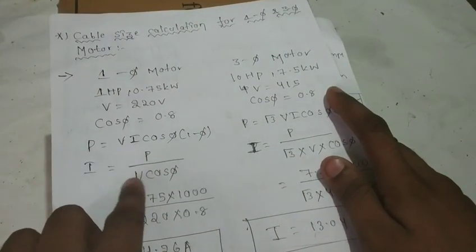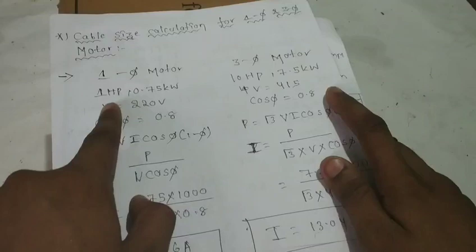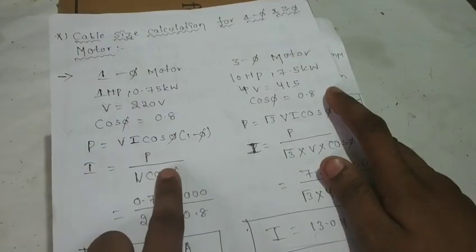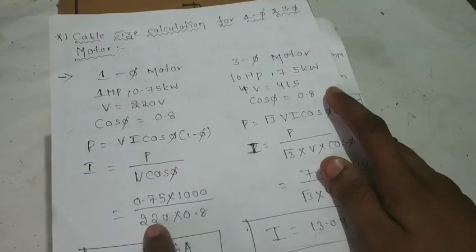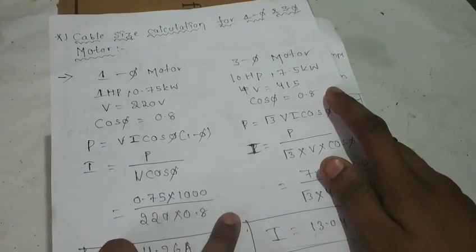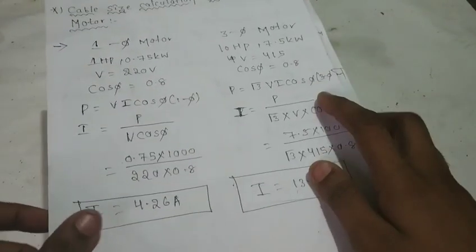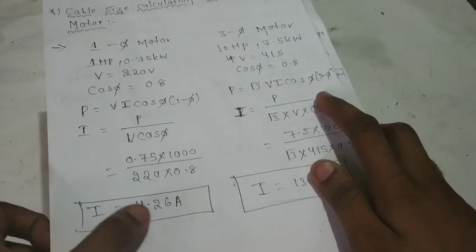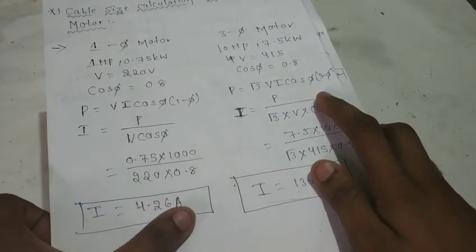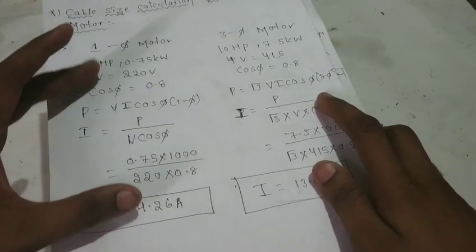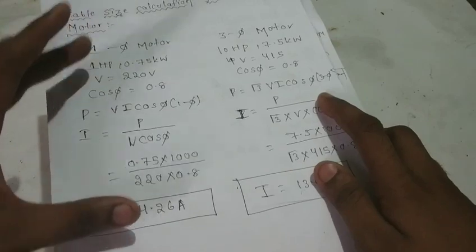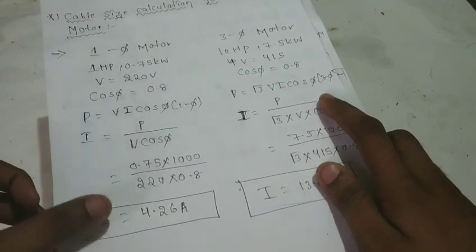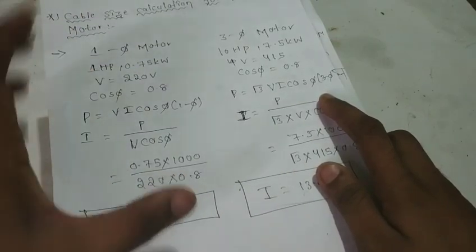This is divided by voltage. Single-phase voltage is 220V. Power factor is 0.8. So the current is equal to 4.26A. This is the motor rated full load current of 4.26A.